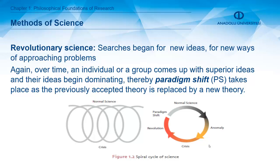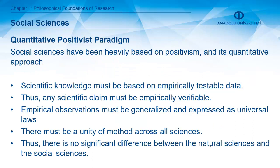During the crisis, scientists begin searching for new ideas and approaches. Over time, some groups of scholars come up with fresh ideas and start to embrace them as new principles. At this point a paradigm shift takes place — the previously accepted theory is replaced by a new theory. This cycle refers to the spiral cycle of science according to Kuhn.